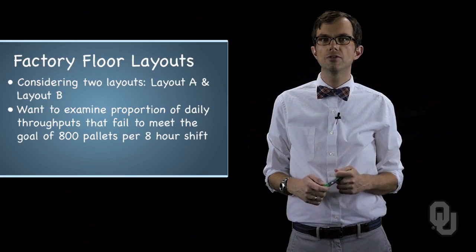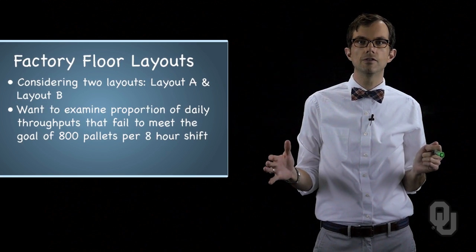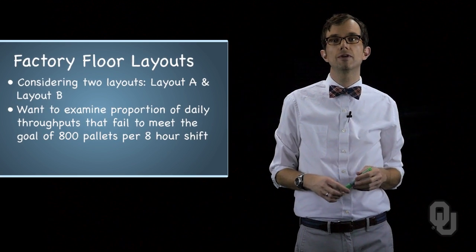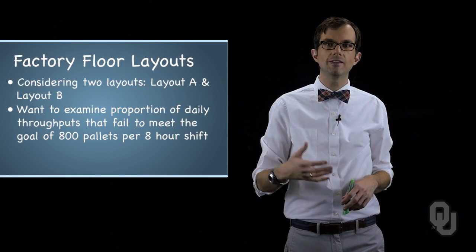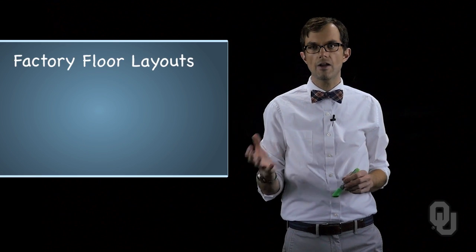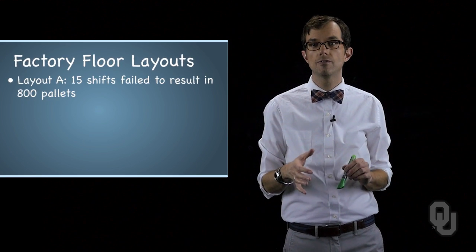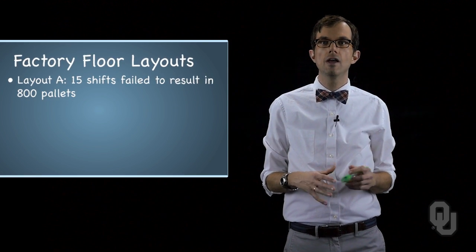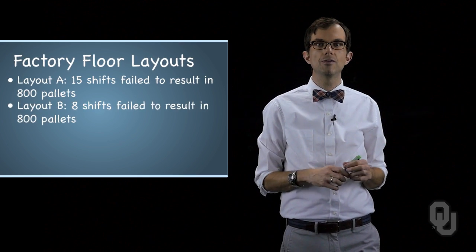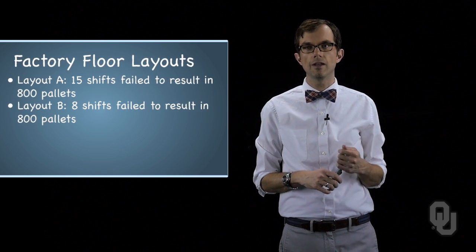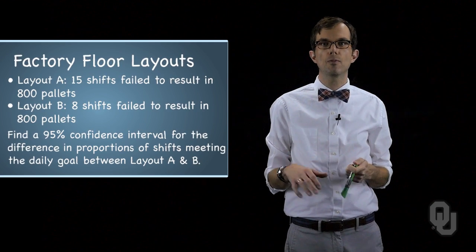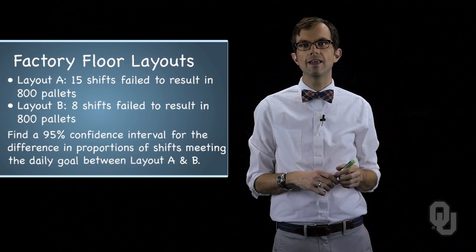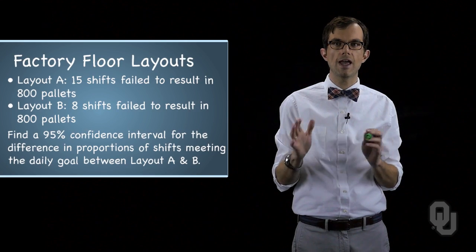For proportions we usually want to have a large number of observations and it's obviously too costly to rearrange the factory floor to collect real observations, so we should simulate say a hundred different eight hour shifts. With layout A, fifteen shifts fail to result in eight hundred pallets and for layout B, eight shifts fail to result in eight hundred pallets. Let's find a ninety-five percent confidence interval for the difference in proportions of shifts meeting the daily goal between layout A and layout B.